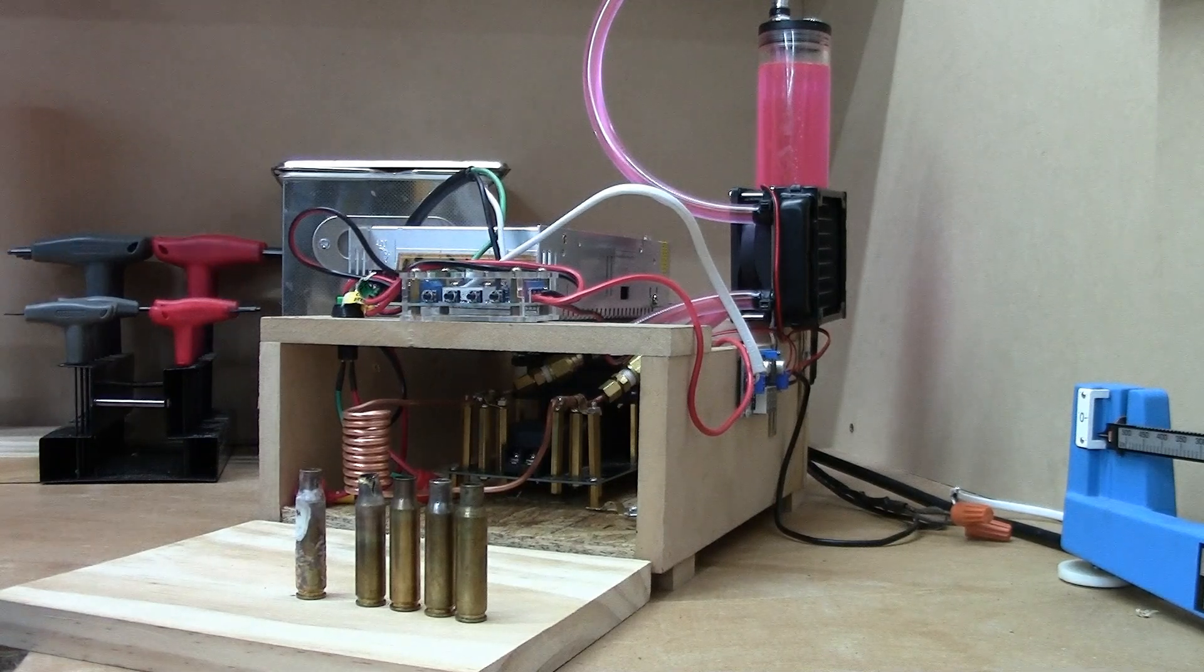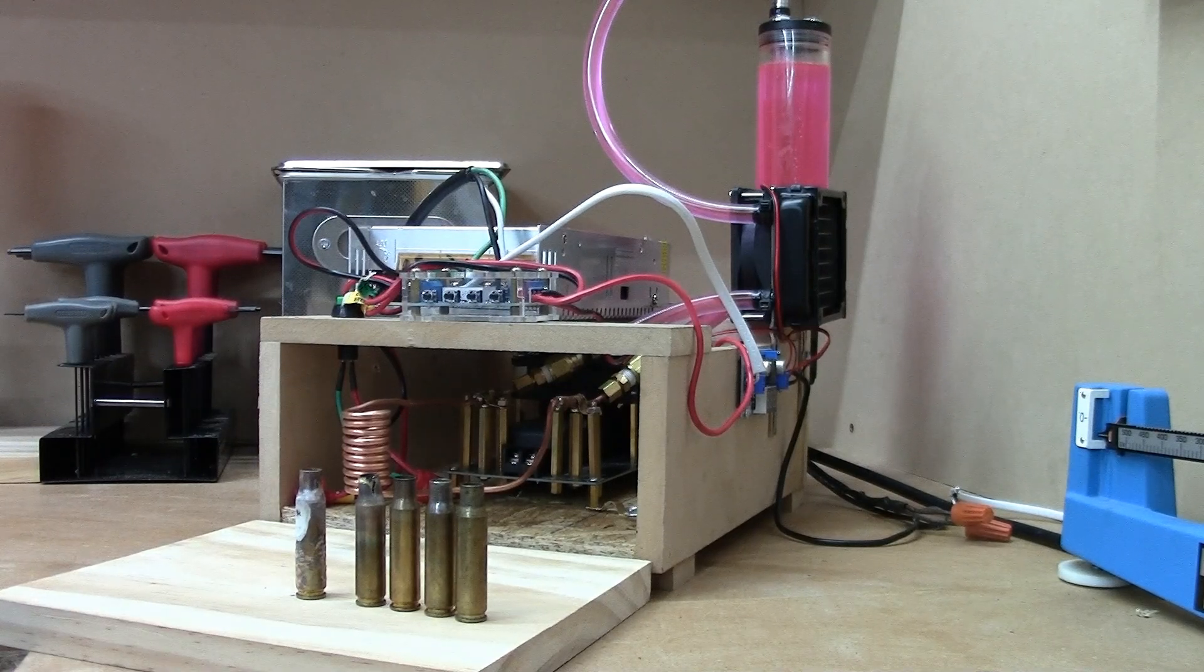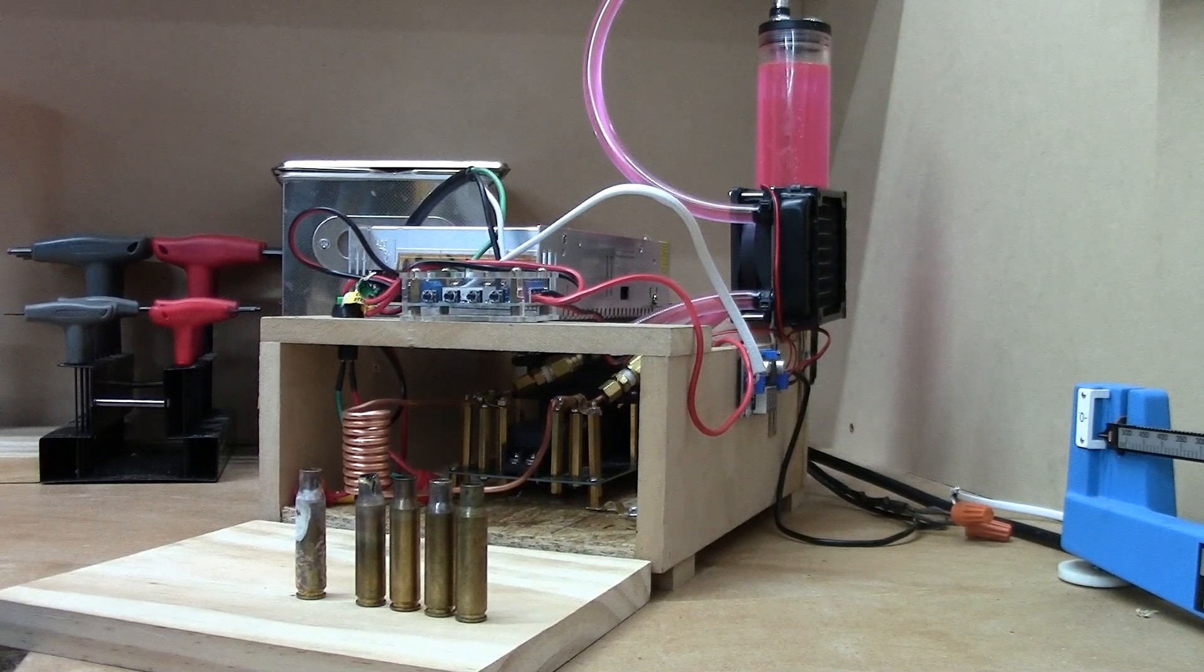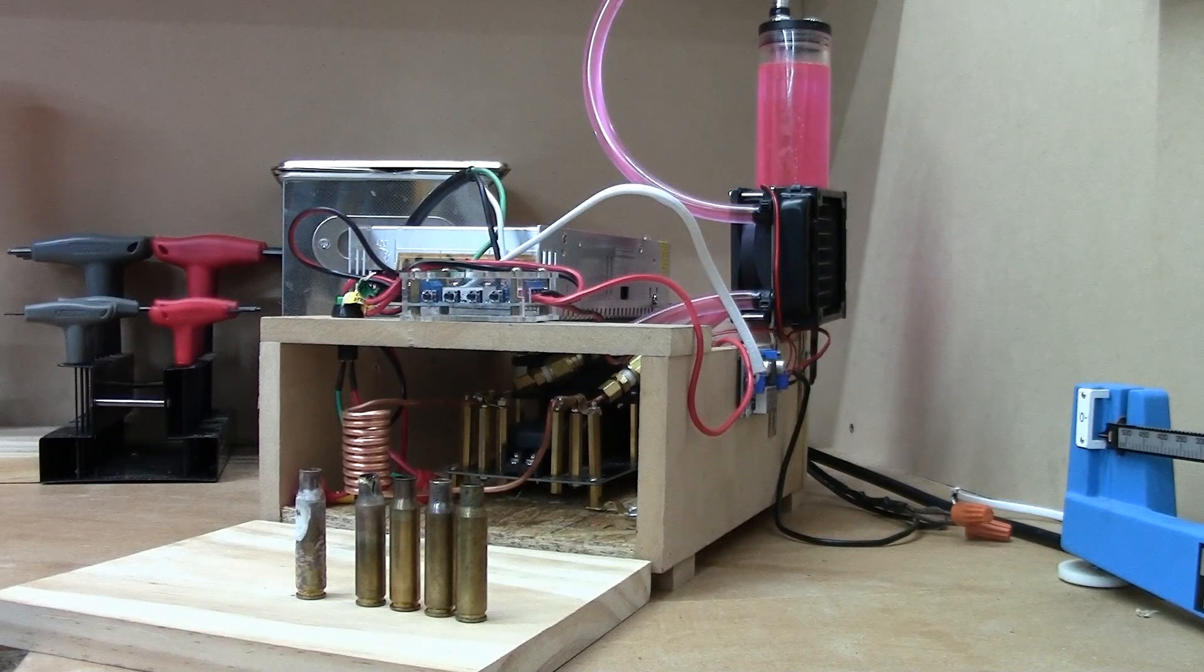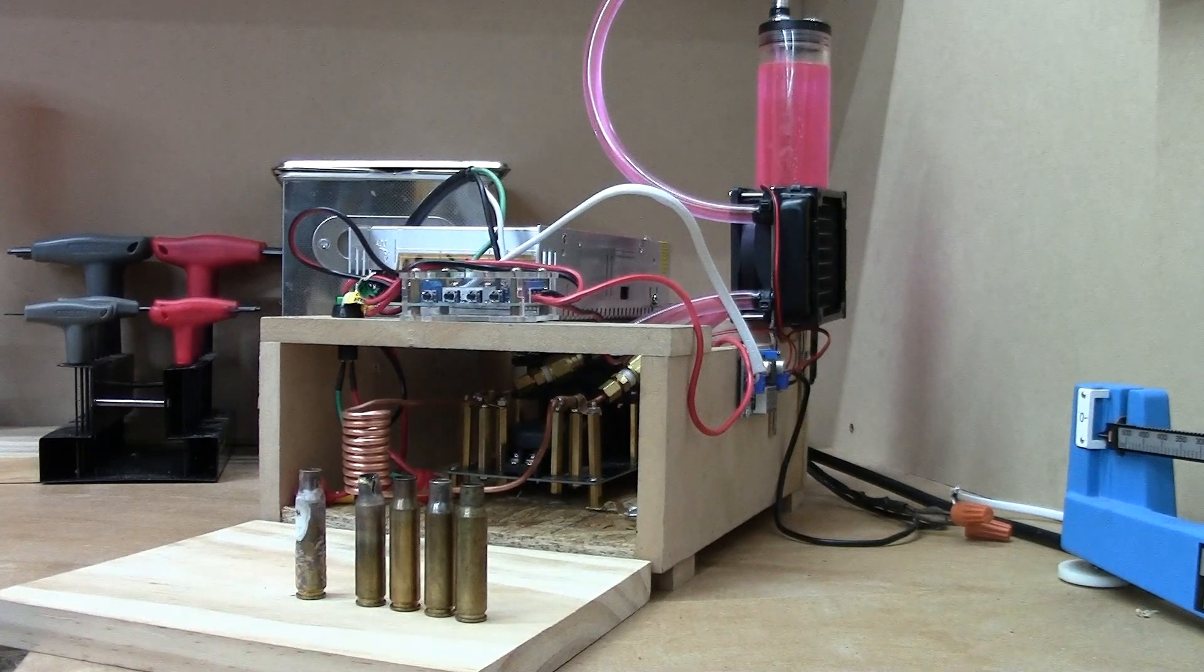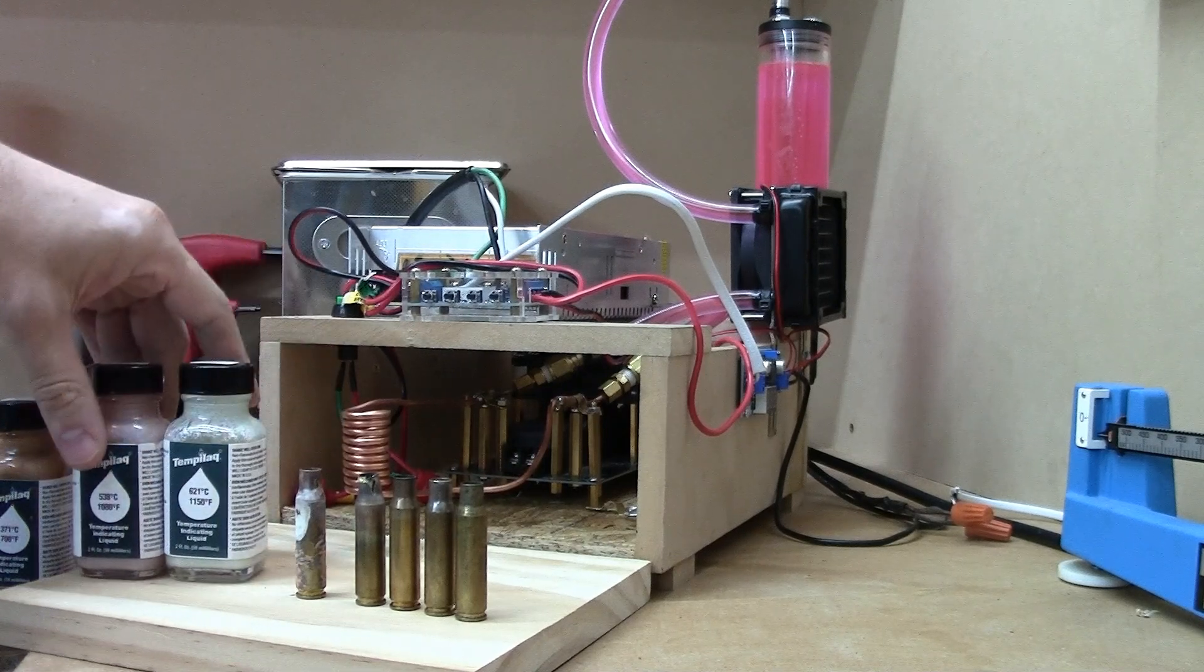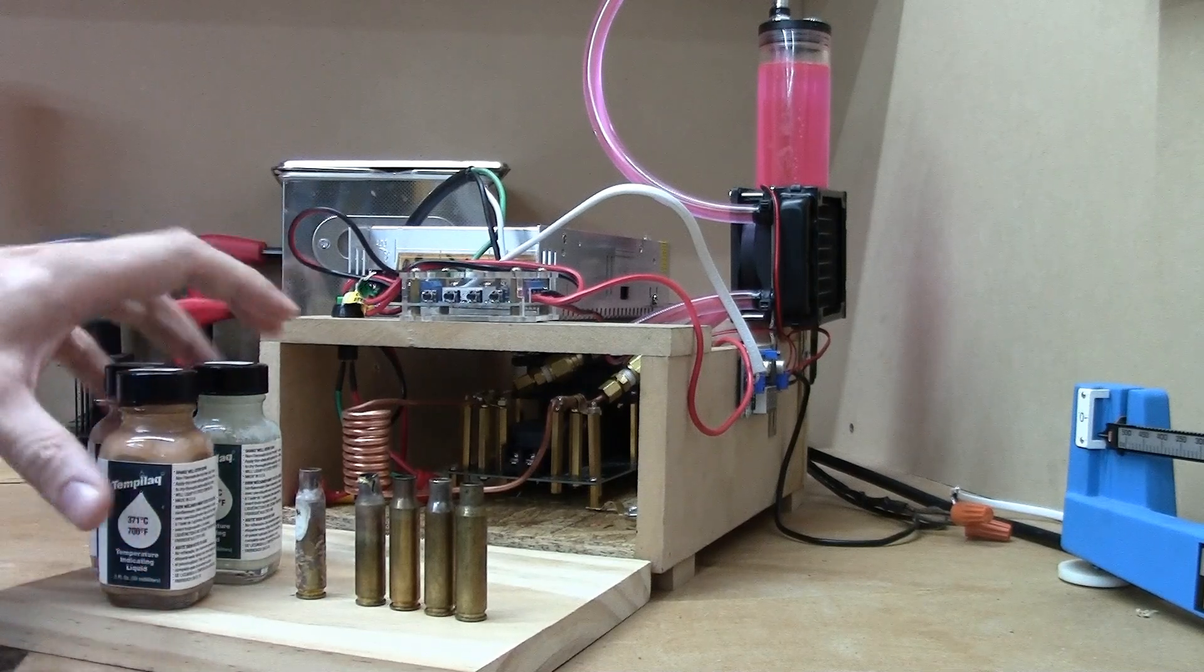When you're annealing you're going to want to make sure and get some other items like Tempilaq in order to read what temperatures you're reaching with your annealing machine. So there's a couple of them right here. They look like this - we got a 1000 and 1150 and a 700.